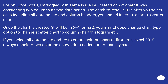For MS Excel 2010, I struggled with the same issue — instead of an XY chart, it was considering two columns as two data series. The catch to resolve it is: after you select cells including all data points and column headers, you should insert a scatter chart. Once the chart is created it will be in XY format, and you may then choose 'Change Chart Type' to change the scatter chart to a column chart or histogram. If you try to create a column chart first, Excel 2010 will always consider two columns as two data series rather than XY axes.